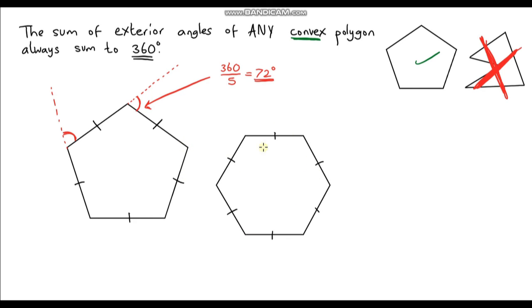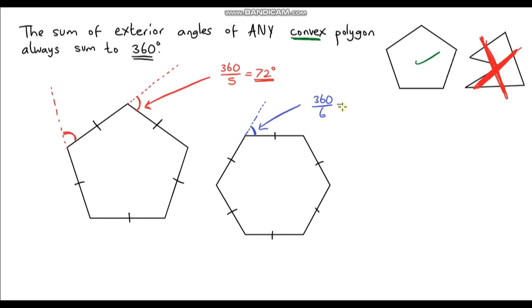What about this hexagon? What would each of the external angles be? Well, again it's a regular hexagon, so we know the external angles are all the same and they sum to 360 degrees. So we do 360 divided by the number of angles, which is 6 because it's a hexagon. 360 divided by 6 gives us 60 degrees.